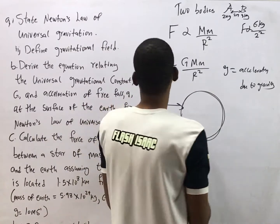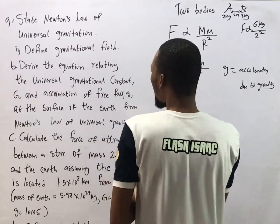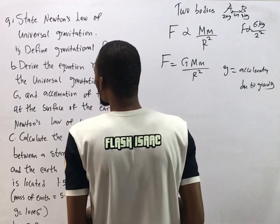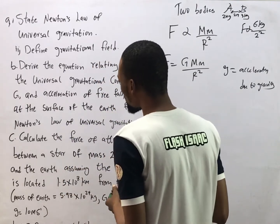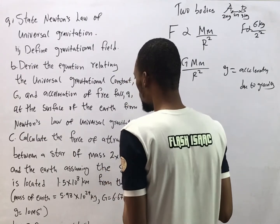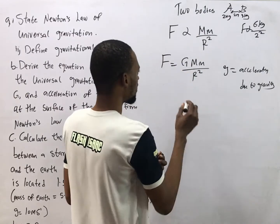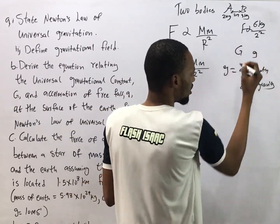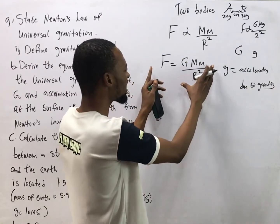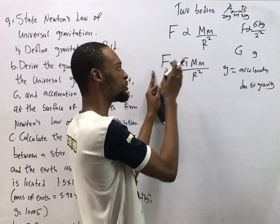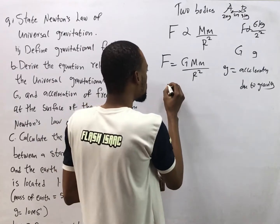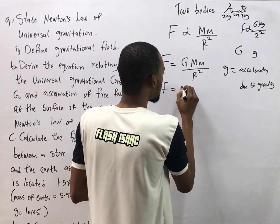Part B says: derive the equation relating the universal gravitational constant G and the acceleration due to gravity small g. To get the relationship between big G and small g, we start with the formula for big G. From Newton's Second Law, we can prove that force equals mg.